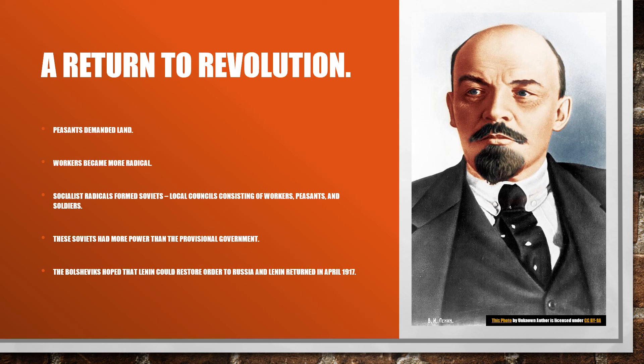The Bolsheviks hoped that Lenin — who was exiled in Switzerland — would return to Russia and restore order and power. Lenin did return in April of 1917, and that would eventually lead to more developments in the Russian Revolution.